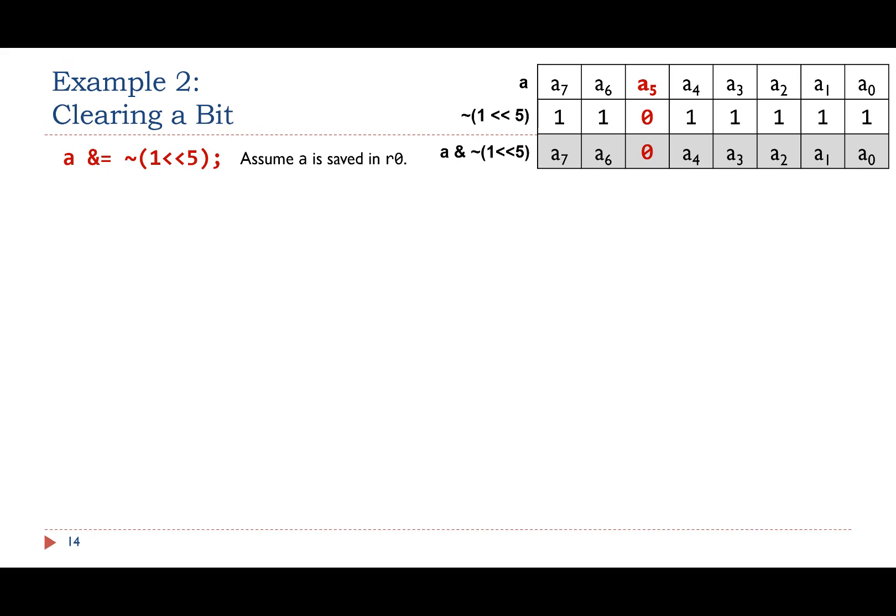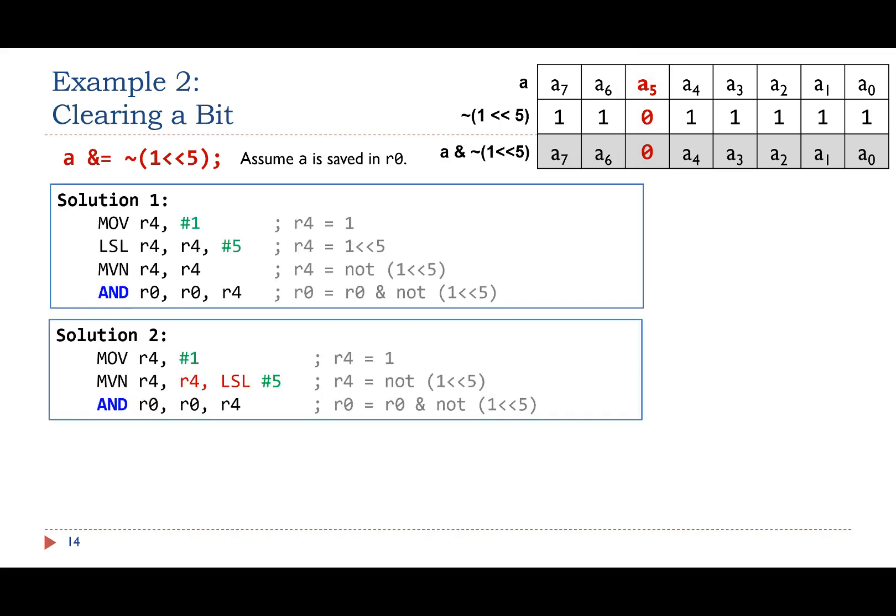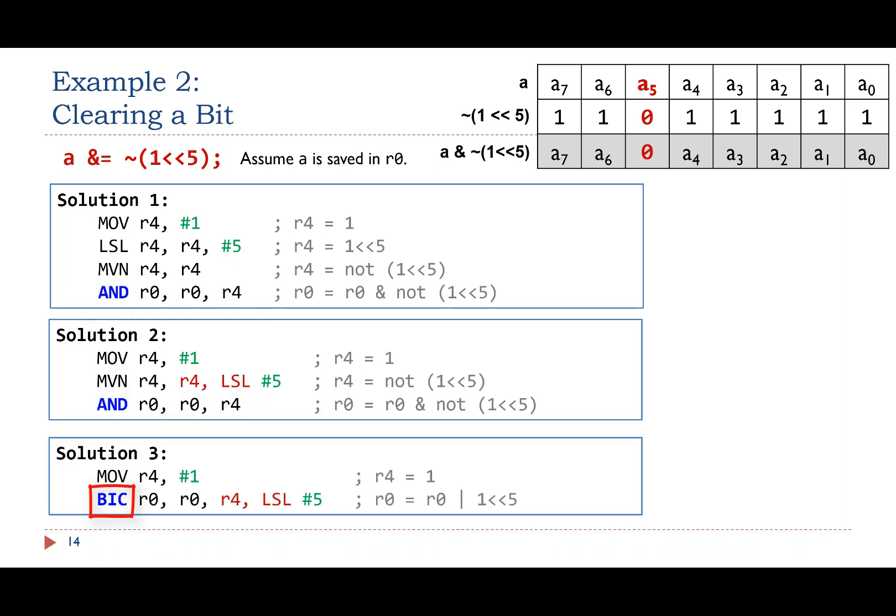Here we give three assembly solutions to clear bit 5. The first two solutions use the bitwise inverse operation and then an AND instruction to clear bit 5. The last solution uses the bit clear instruction BIC to clear selected bits in the first source operand register. For each bit in the second source operand, a 1 clears the corresponding bit in the first source operand.